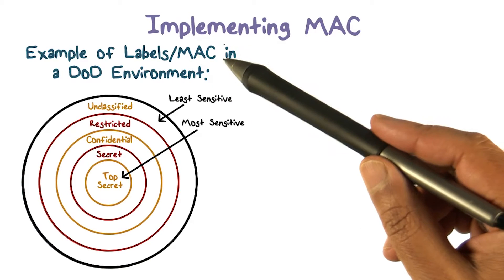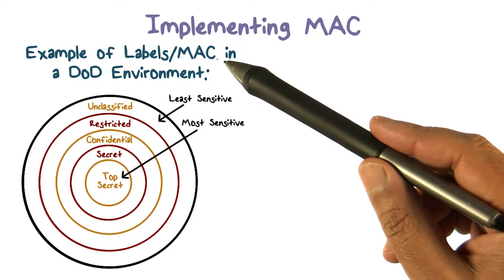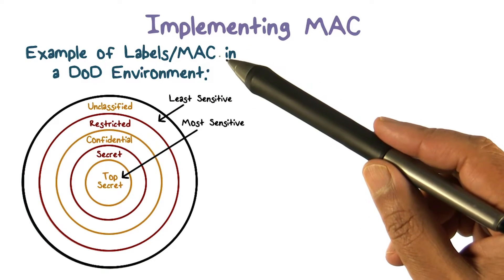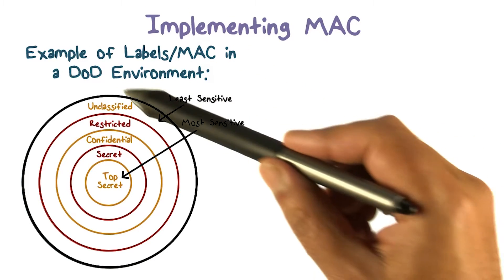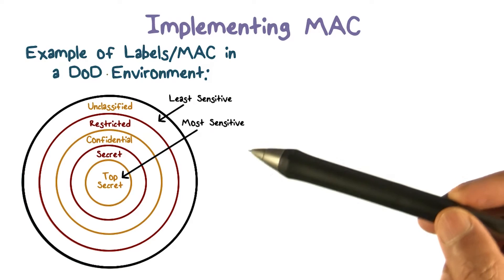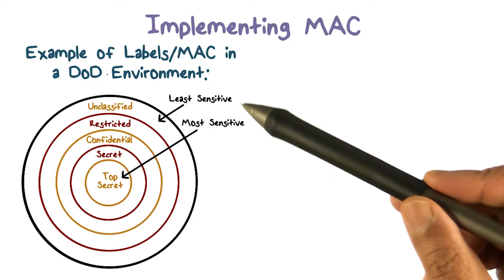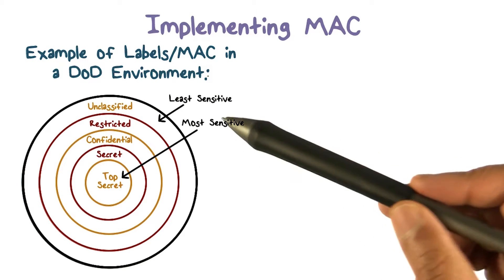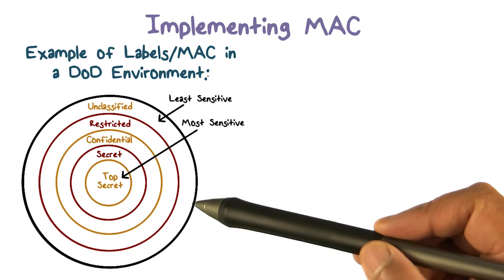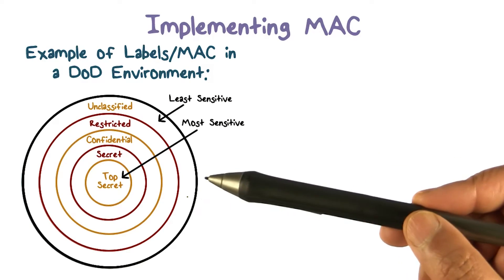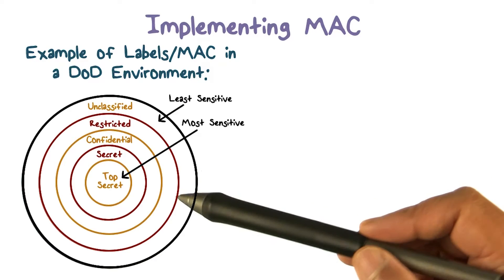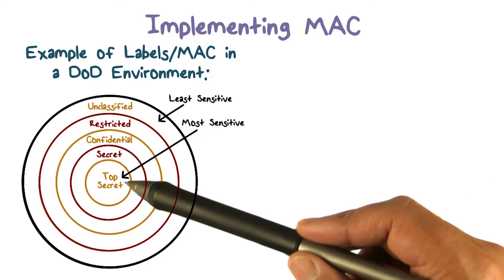We're going to explore the idea of labels that a mandatory access control policy would use in a DoD, Department of Defense, kind of environment, by looking at some examples.